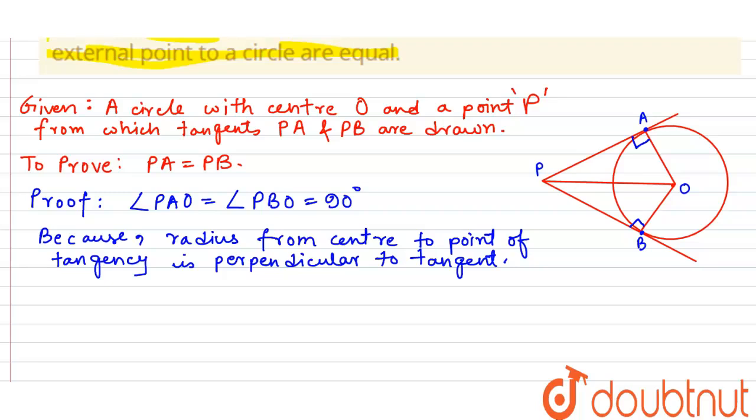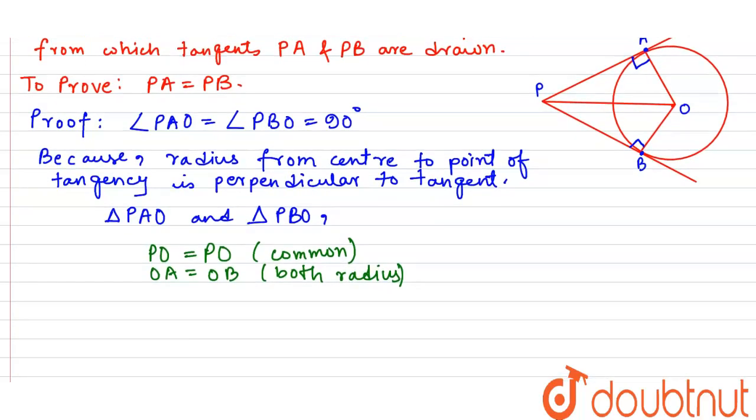Now let's look at these two triangles, triangle PAO and triangle PBO. In these two triangles, PO equals PO because it is common, and OA equals OB as both are radius, and angle PAO equals angle PBO. Both are 90.